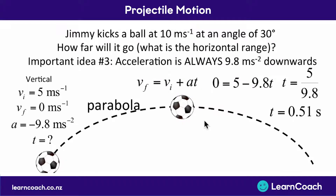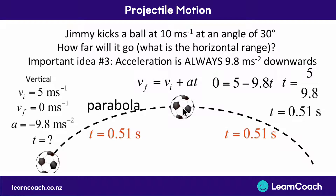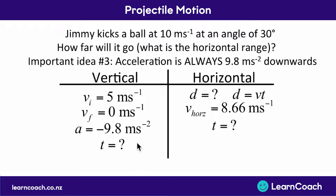This 0.51 seconds is the time from launch up to the peak. Because the parabola is perfectly symmetrical, the time coming back down is exactly the same — another 0.51 seconds. So the total time the ball is in the air is 1.02 seconds. Time doesn't have a horizontal or vertical direction, so time is always the thing that links the vertical and horizontal calculations together.